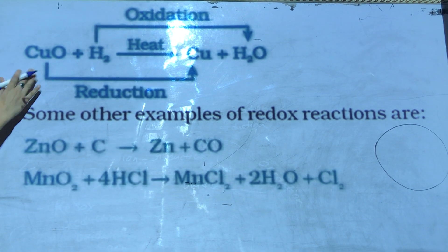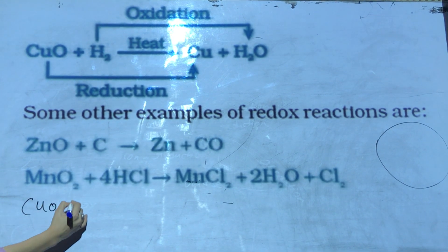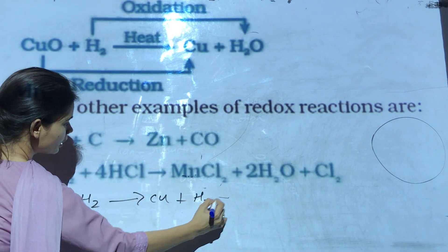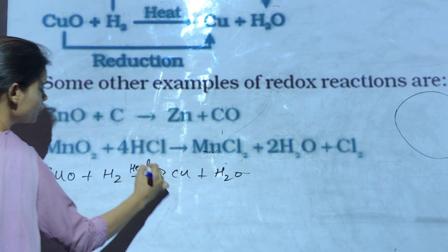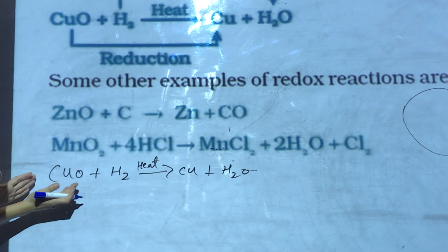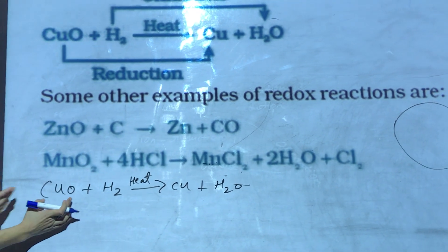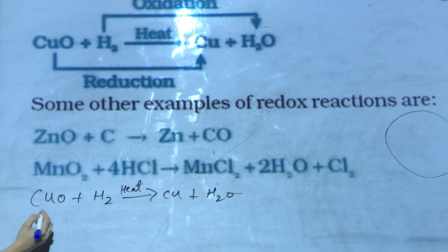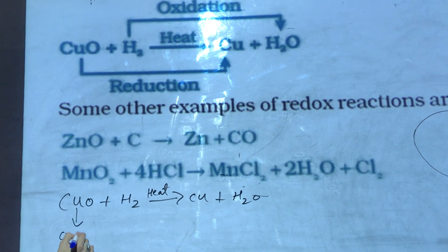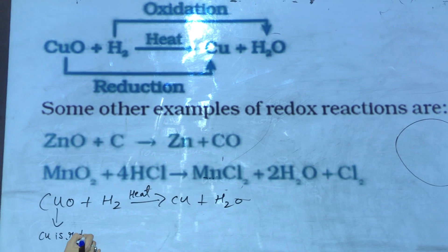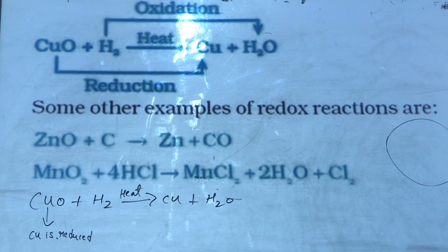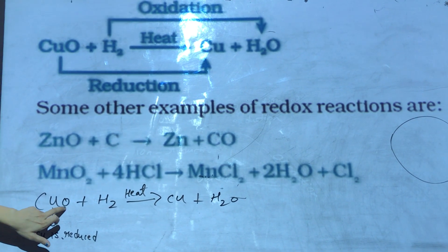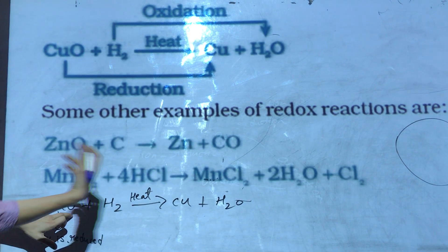For example, we have this equation: CuO + H₂ → Cu + H₂O on heating. Here you can clearly see that CuO is reduced because oxygen is removed from Cu, so we will say that Cu is reduced.